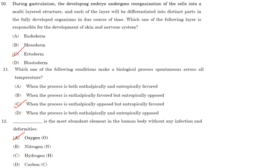Which one of the following conditions makes a biological process spontaneous across all temperatures? That is when delta G is less than zero — when the process is enthalpically opposed but entropically favored. Answer is option C.